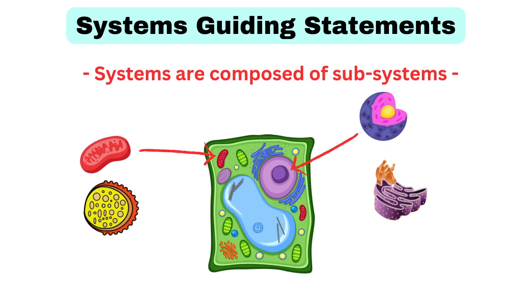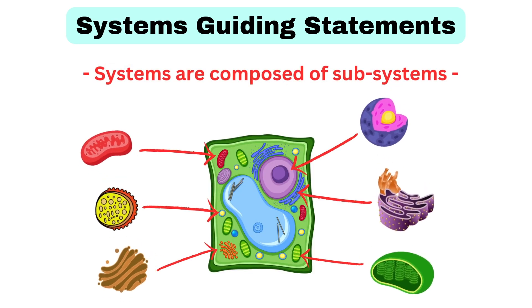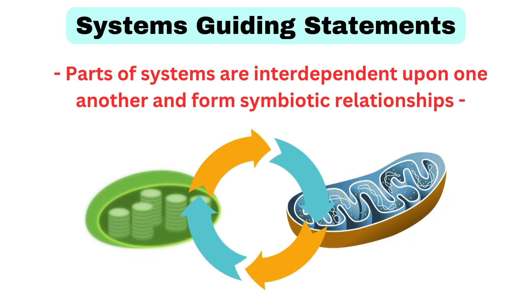Systems are composed of subsystems. Parts of systems are interdependent upon one another and form symbiotic relationships.